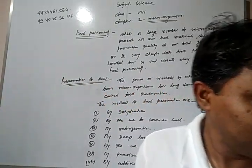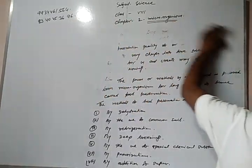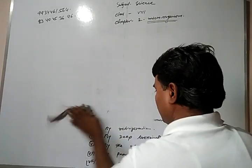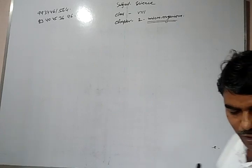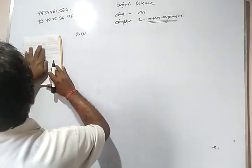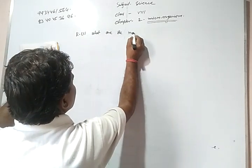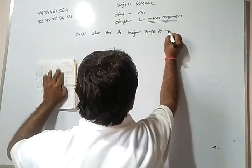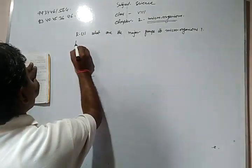Students, I give some questions from this chapter. Question number one: What are the major groups of microorganisms? Question number two: Which microorganism is utilized in making curd, bread, and cake?